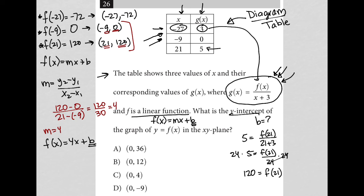So how do I find b? Well, I can go back and take this ordered pair again and say, this point is telling me that when f of x is 0, x is negative 9. So I'd have 0 equals 4 times negative 9 plus b. And 0 equals negative 36 plus b. And therefore, 36 is equal to b. And there's my y-intercept.